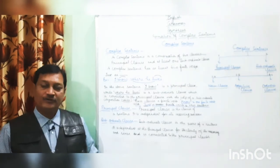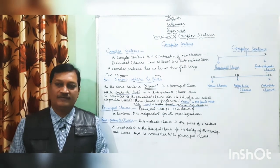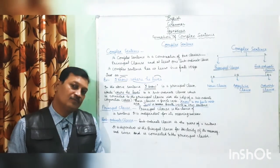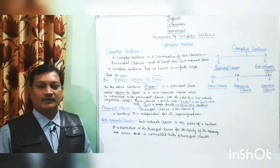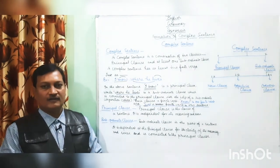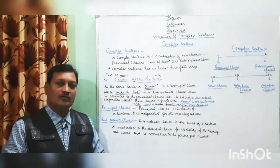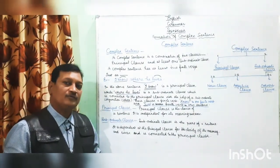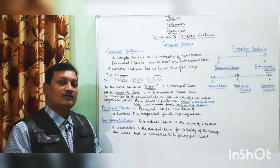Dear students, in this video I am going to teach you the combination of simple sentences into a complex sentence. Before we start learning the rules, let's have some basic information about a complex sentence. A complex sentence is a combination of two clauses — a principal clause and at least a subordinate clause.